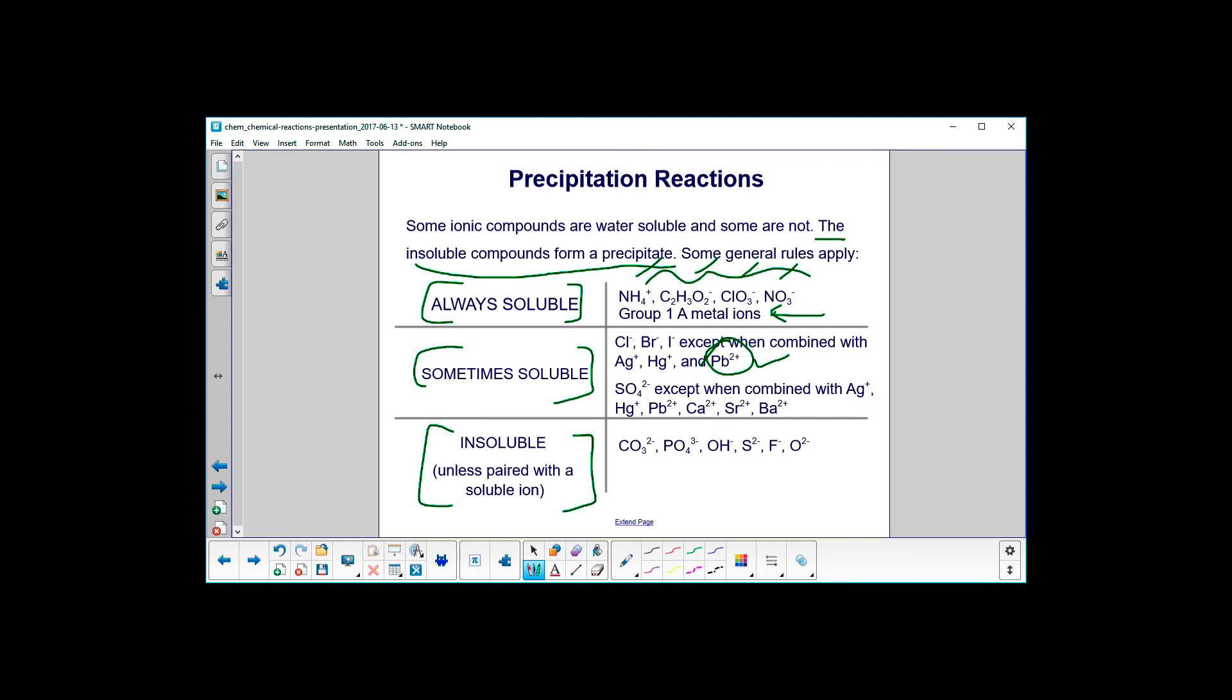Insoluble, unless they're paired with a soluble ion. Life is not simple, is it? Carbonate, phosphate, hydroxide, sulfur, fluorine, oxygen. So this bears some review.